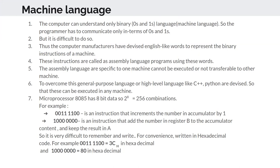Now coming to our microprocessor — the 8085 — which we will study at this level. The 8085 is an 8-bit microprocessor, meaning it stores 8 bits of information per memory location. Imagine memory like a page with lines, where each line stores 8 bits. With 8 bits you can form 2^8 = 256 different combinations of instructions.